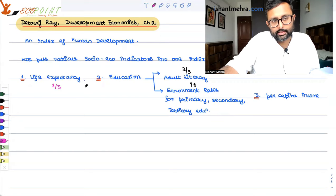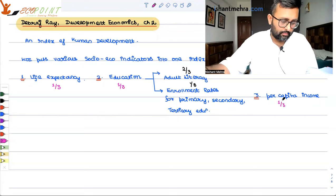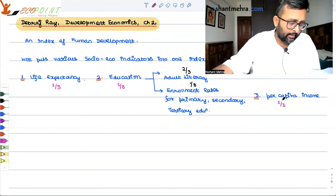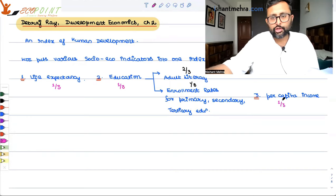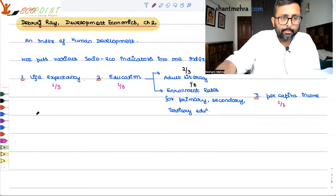You give equal weight to all three indicators. HDI is calculated by defining a country's achievements in terms of life expectancy, education, and per capita income, and then you take the simple average of all of them — whatever values you are getting, divided by three. The main advantage of HDI is its simplicity.